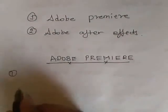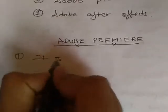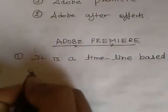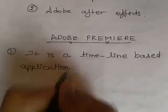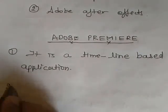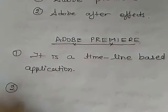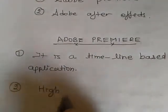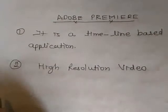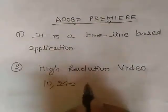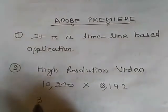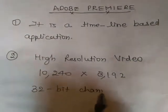The first point about Adobe Premiere is that it is a timeline-based application, so in this we can have real-time video editing. With the help of Adobe Premiere, it supports high-resolution video. It can provide a pixel size of 10,240 multiplied by 8,192, and this software provides up to 32-bit channel coloring.